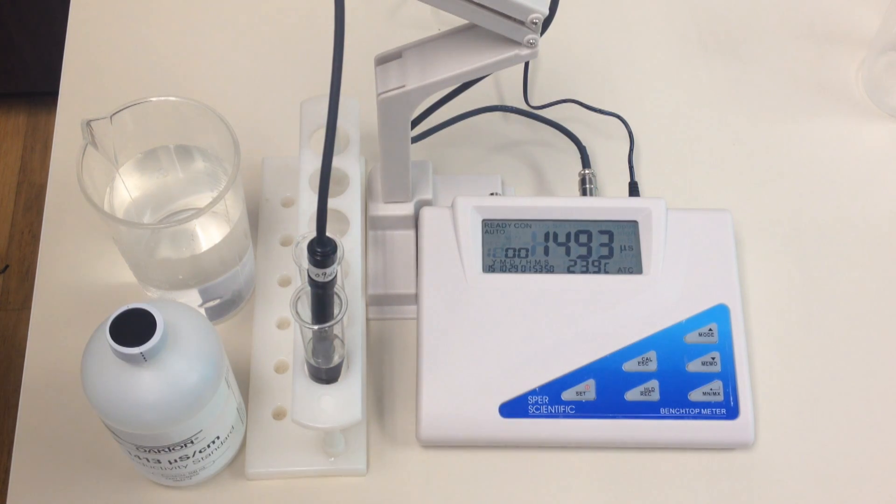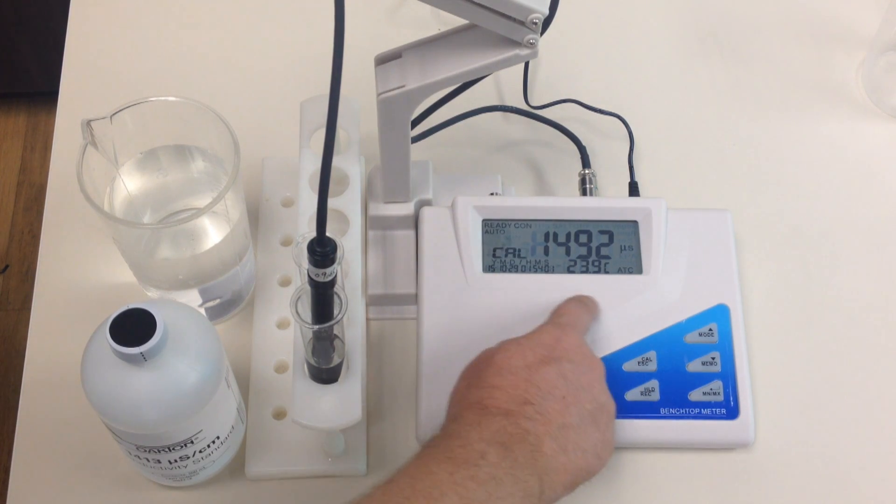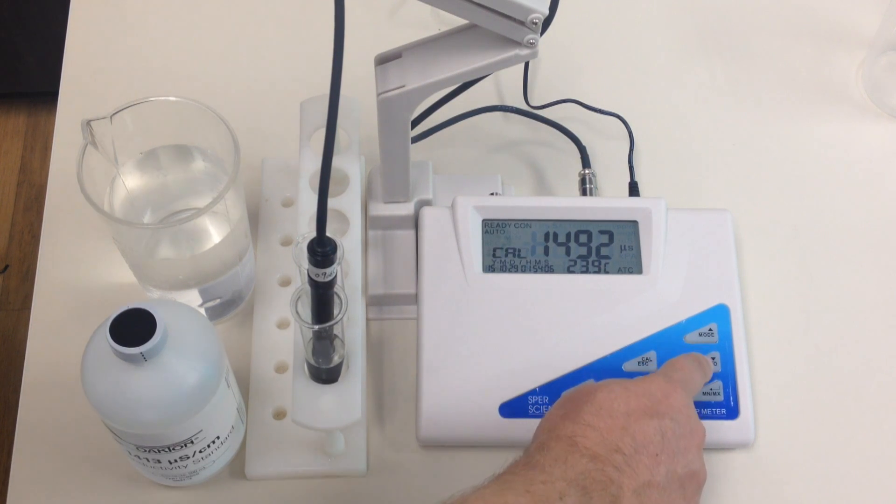Now, once we know that we're in the right mode, we're going to start calibrating the unit. And again, because it's an auto calibration, it's very simple to do. All you do is hit the calibration button. We're now going to be calibrating the unit, wait for it to stabilize.